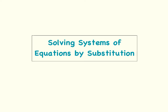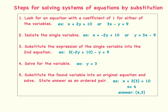So let's move on and start with the steps. There are about five steps for solving systems of equations by substitution. Step number one: look for an equation with a coefficient of 1 for either of the variables. I will be using these two equations as my system of equations to show you the steps. In the first equation, I can see that I have a positive 1 as my coefficient for x. If I look at my second equation, I have a negative 1 for the coefficient of y. So I'm going to choose the first equation.